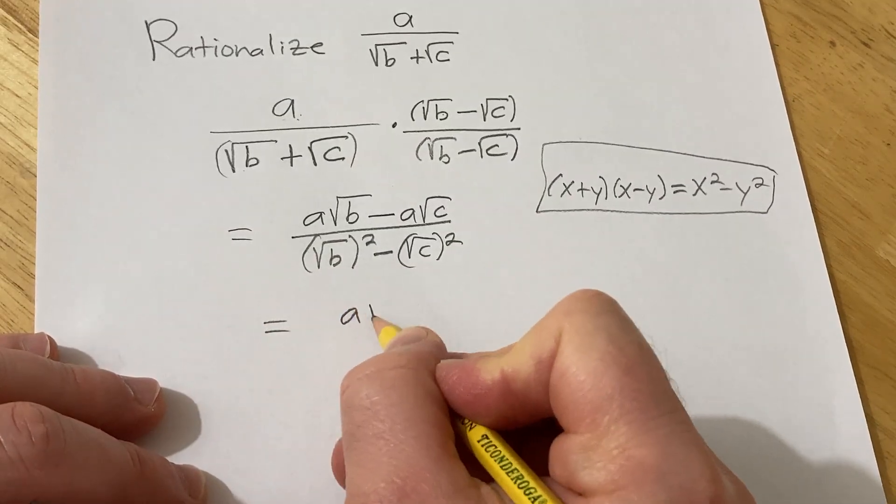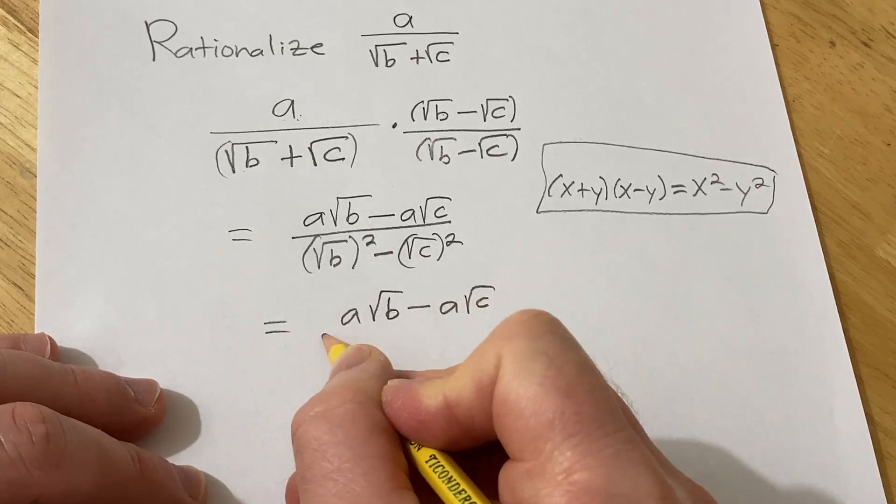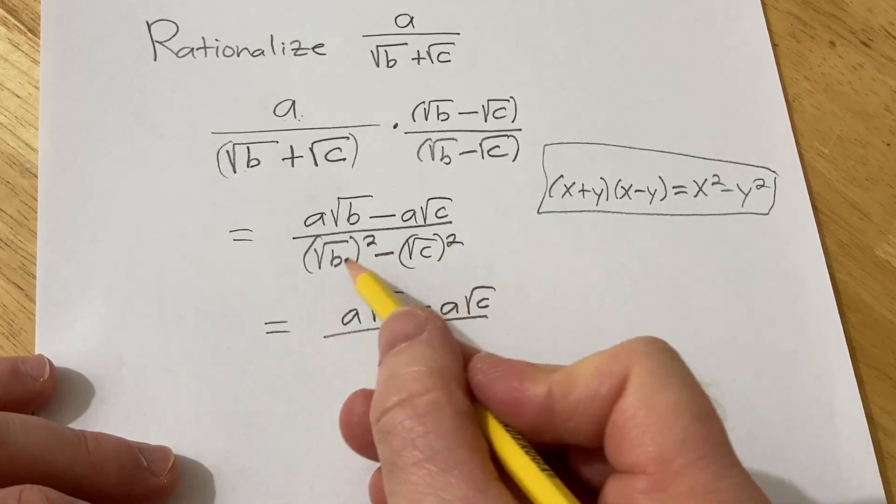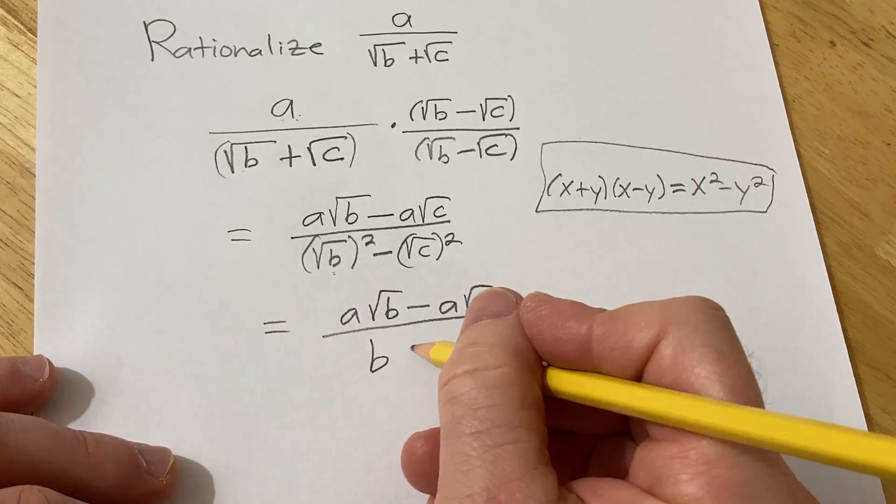So this is equal to a square root of b minus a square root of c over, and then the square root of b squared is simply b, the square root of c squared is simply c.